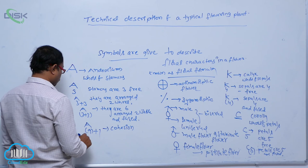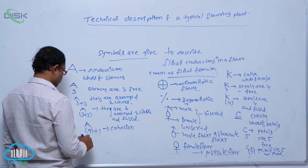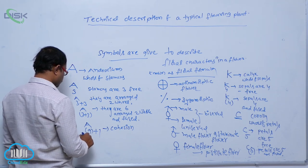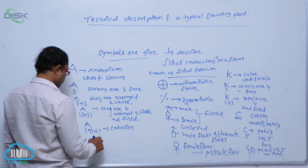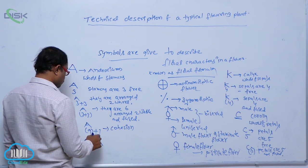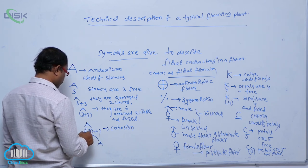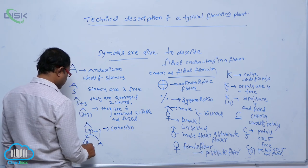Cohesion. For example, after that, adhesion - it means stamens are connected to the petals. That is known as adhesion.